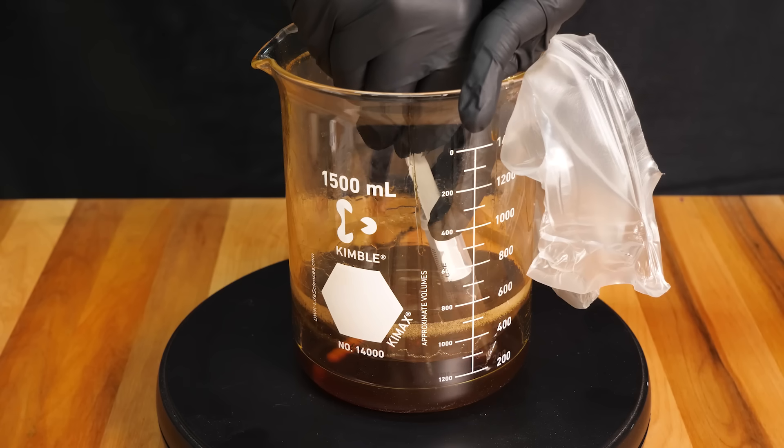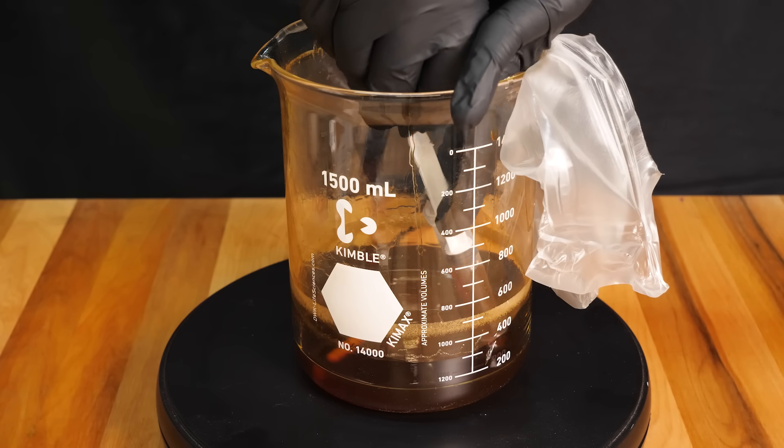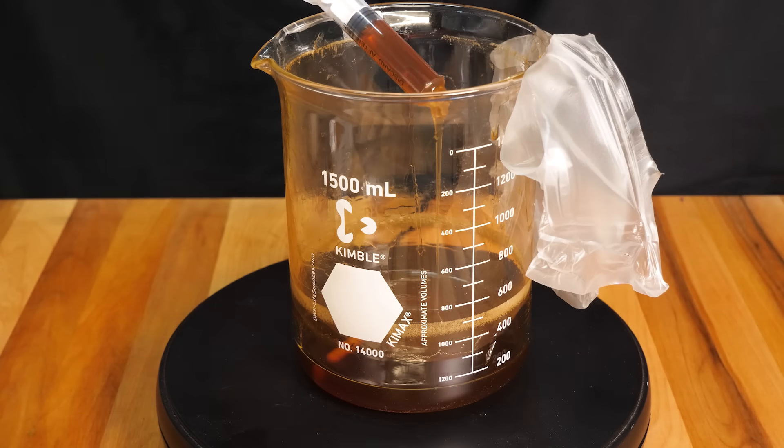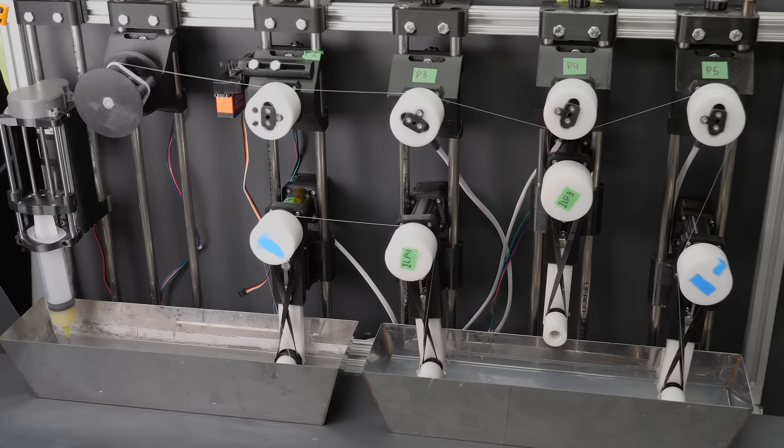Now, how do we go from this bucket of what looks like a cross between honey and snot into a nice usable fiber? It's actually fairly straightforward. Chitosan is only soluble in acid, right? So, we neutralize the acid by injecting the spinning dope into a bath of sodium hydroxide. This will quickly produce nice noodles of chitosan, though we're not going to eat these ones. With our dope prepared, we can start spinning.